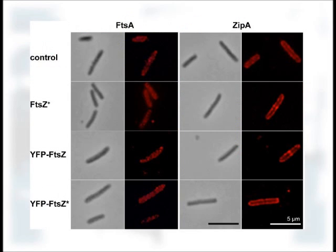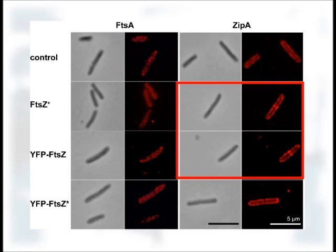FtsA is distributed evenly over the cell. It doesn't form around the midline. Unlike ZipA, which does localize to the midline of the cell. But without functional FtsA, the binding doesn't happen for ZipA. So when you have FtsA star or no FtsA at all, ZipA doesn't localize to the middle of the cell. So ZipA appears to be dependent on the presence of active FtsZ in order to work.